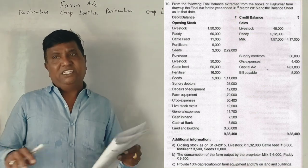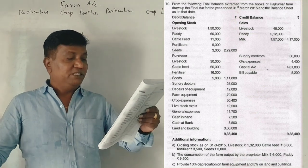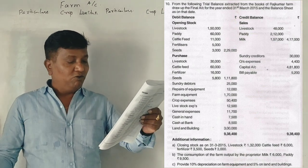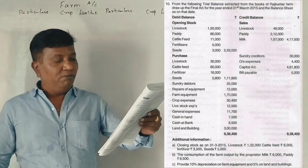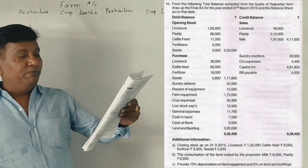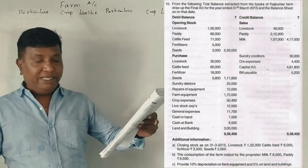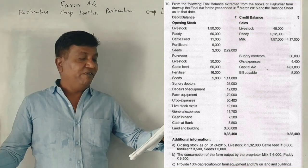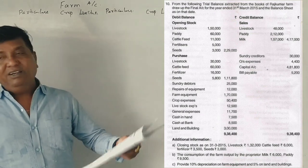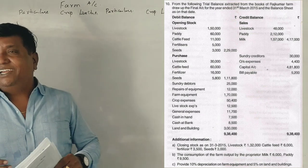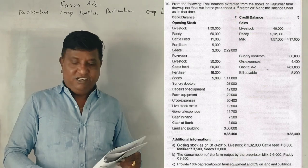Adjustments: closing stock, consumption of farm output by proprietor — milk 6,000, paddy 9,500. Provide 10% depreciation on farm equipment and 5% on land and building.